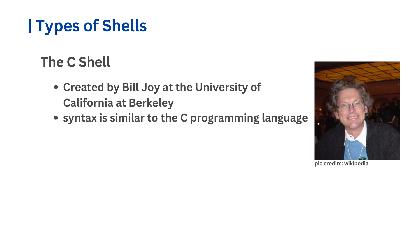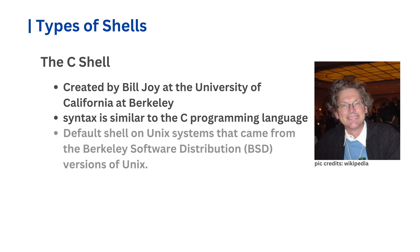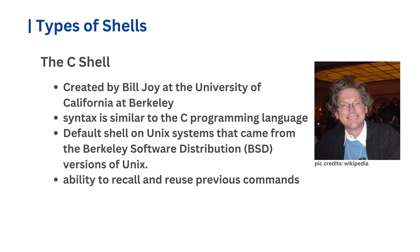The C shell quickly became popular and was the default shell on BSD (Berkeley Software Distribution) versions of Unix. It added useful features to the older Bourne shell, such as the ability to recall and reuse previous commands. This feature is handy when you need to run multiple commands for a task. Two common C shell commands are !! which runs the last command again, and $_ which inserts the last argument of the previous command.